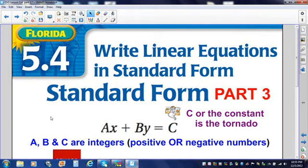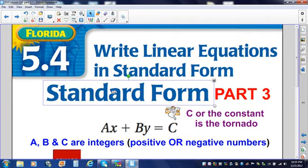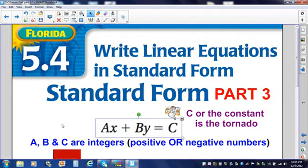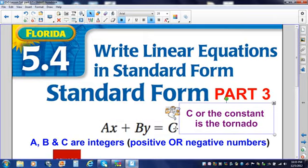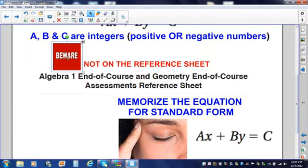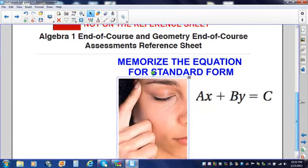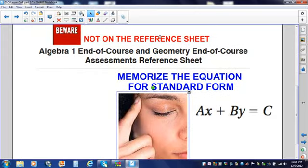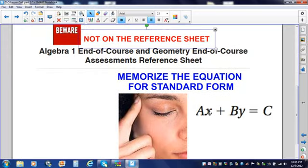Lesson 5.4. Wrapping up 5.4 today. Standard form, Part 3. Remember that we said standard form is Ax plus By equals C. C, our constant, the number that is constantly by itself, is the tornado. We also said, beware, you have to memorize the equation for standard form. It is not on the reference sheet. X and Y hang out on the same side.